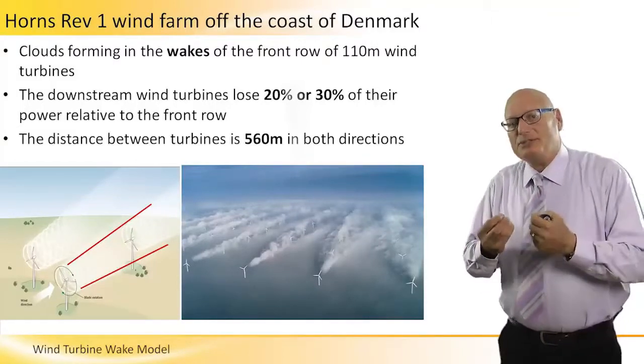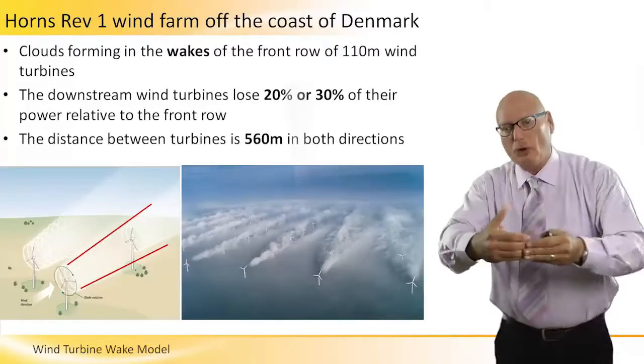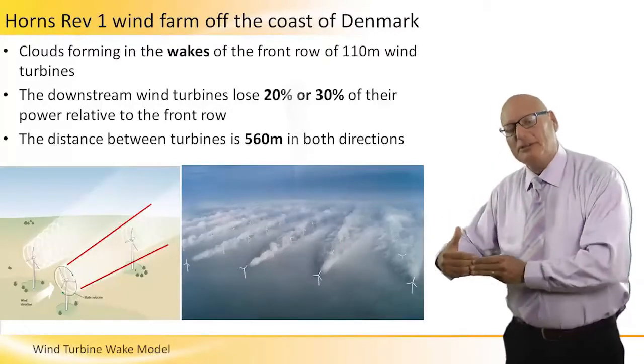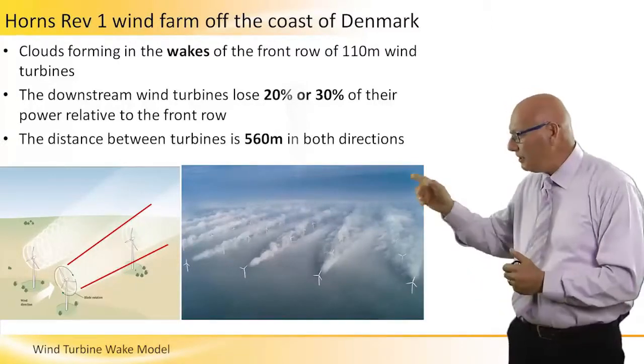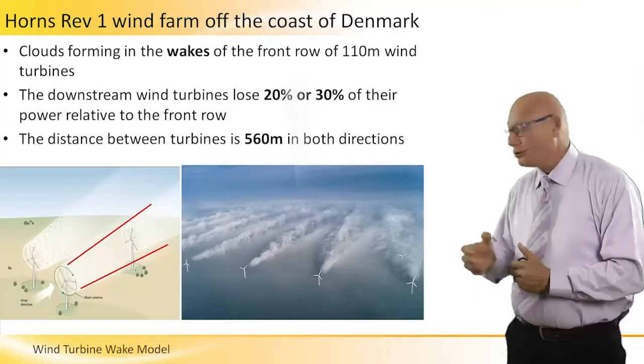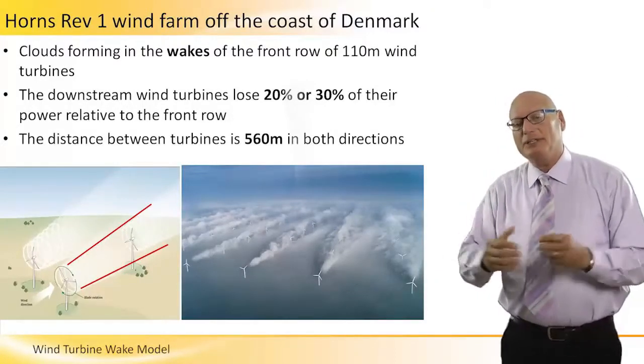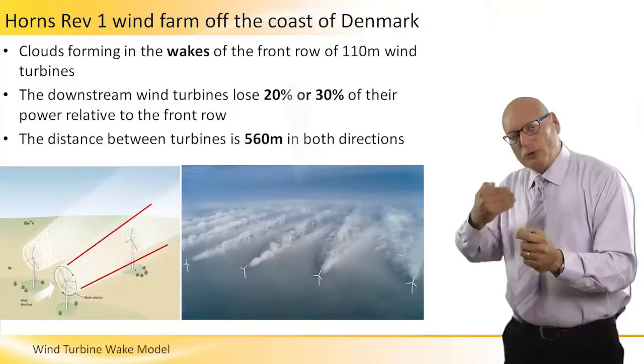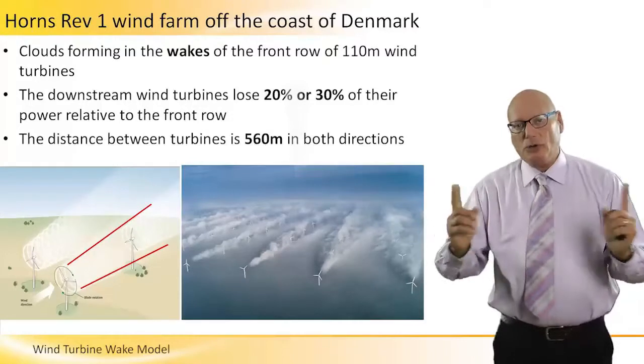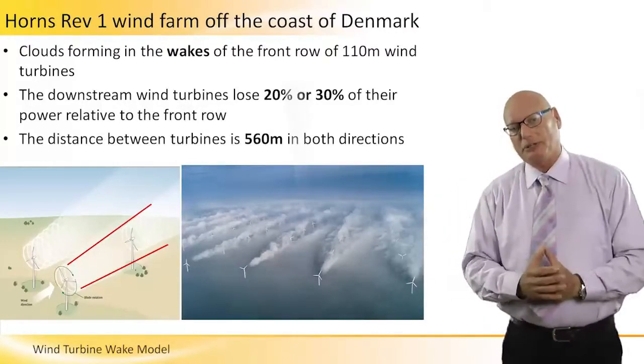This causes us to increase the distance between the front row and the row behind it, and in this particular park which is an offshore, the distance between rows is 560 meters. That's from the front row to the one in the back, also one turbine to its neighboring turbine.